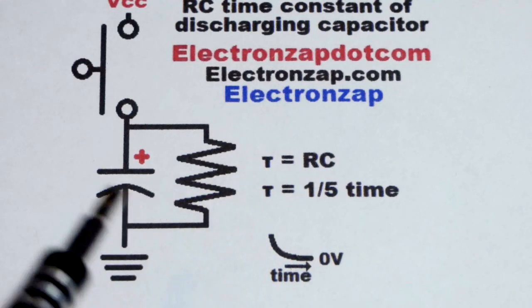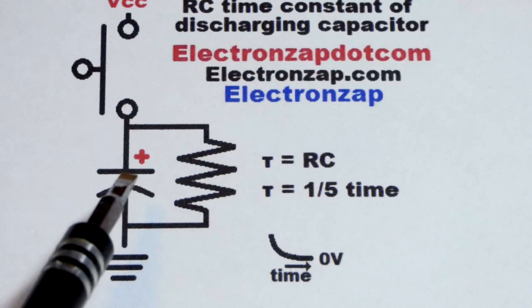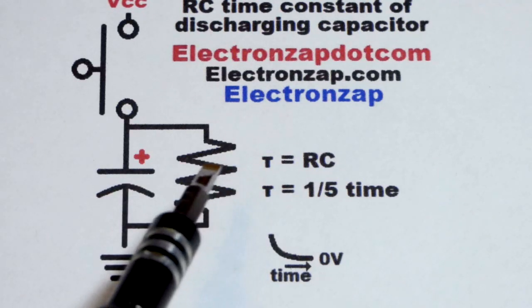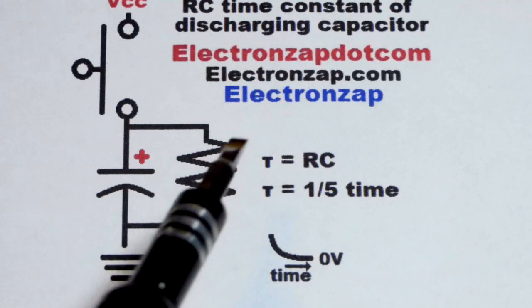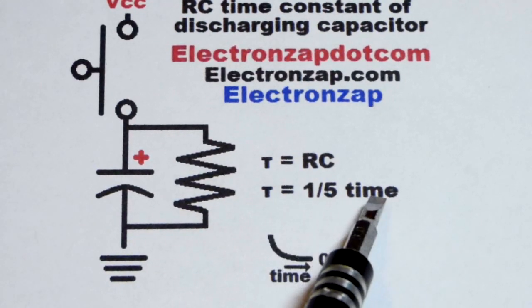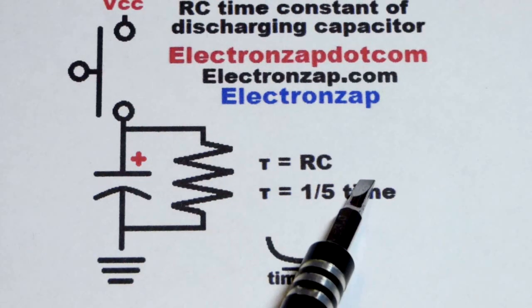To make the math easy, I'm going to use a 1000 microfarad capacitor, so 1/1000th of a farad, and a 1000 ohm resistor. When you multiply them together, you get one. So that one is going to be one fifth of the time for the capacitor to discharge.